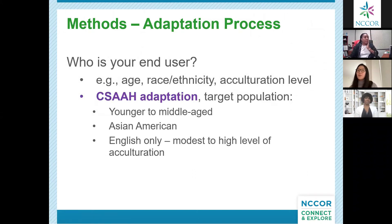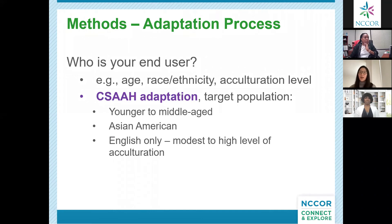The first step in our process was to specify who the research participants would be — in other words, who your end user is. Characteristics to consider include age, race, ethnicity, or acculturation level. Because Pascual was administering his survey online, we conjectured that participants would be younger to middle-aged Asian Americans, and because the survey was in English only, that they would have a modest to high level of acculturation to U.S. society. It was a combination of the sampling design, budgetary considerations, and capacity that helped guide to what degree we wanted to adapt the measure.